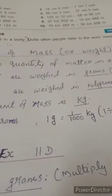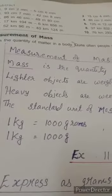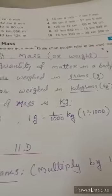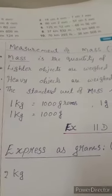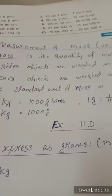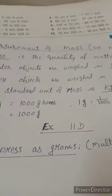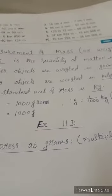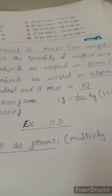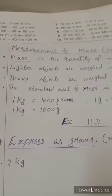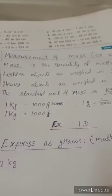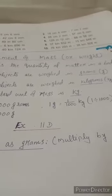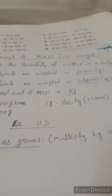Now heavy objects are weighed in kilograms. For kilograms, we will write kg, small k, small g. The standard unit of mass is kg. International system of unit considered kg as standard unit. So 1 kg is equal to 1000 grams. 1 gram is equal to 1 by 1000 kg, 1 divided by 1000.